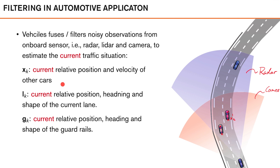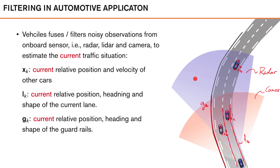We have another state vector x2k for a second car, and x3k for another. We also want to estimate the current relative position, heading, and shape of the current lane — the geometry of the lane, which we call lk. This is crucial information for planning a path that keeps the vehicle in its own lane. Similarly, we can use radar reflections from the guardrail to estimate its relative position, heading, and shape. In order to be classified as a filtering problem, these quantities should be estimated using data up to the current time.